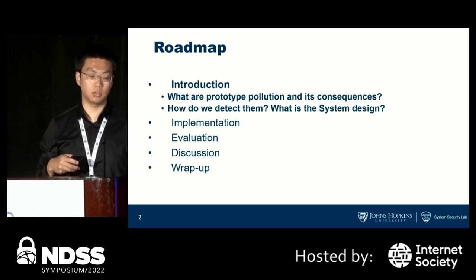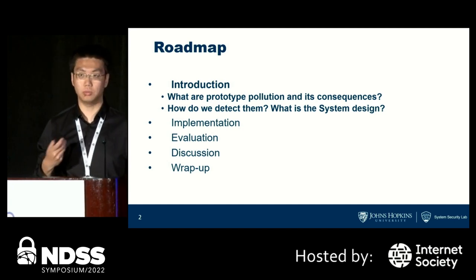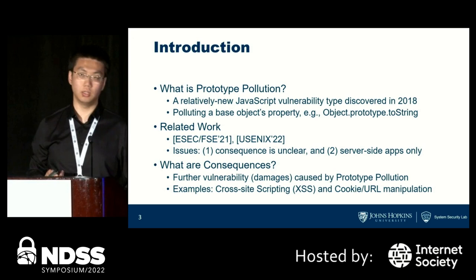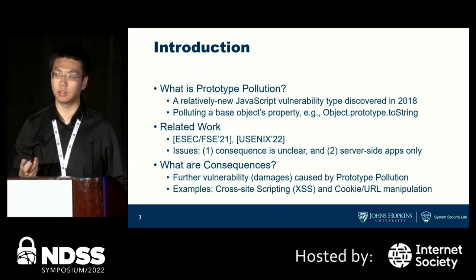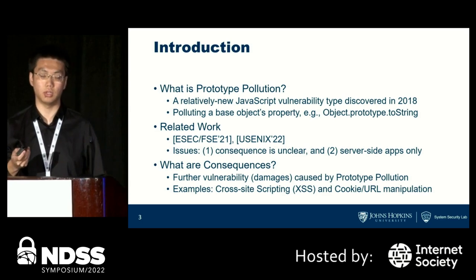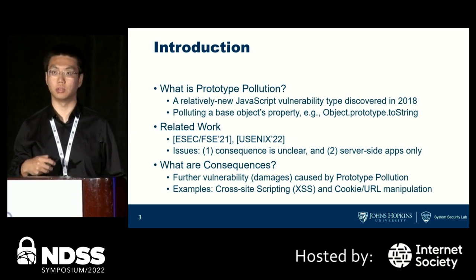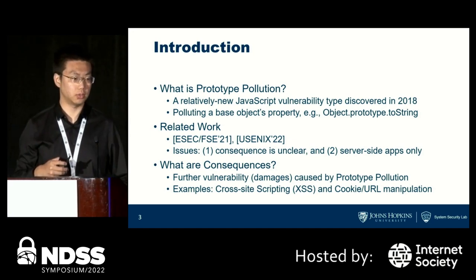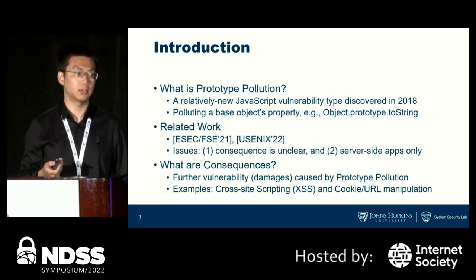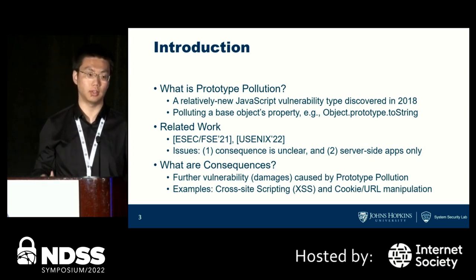In the introduction, there are mainly two questions: what is prototype pollution and its consequences, and how do we detect them? Prototype pollution involves polluting a base object's property in JavaScript, and such a property opens up a backdoor for adversaries to inject malicious scripts, causing further severe consequences. Prior works study prototype pollution but have two issues: the consequences are unclear, and they targeted server-side applications only, such as Node.js, without studying client-side prototype pollution.